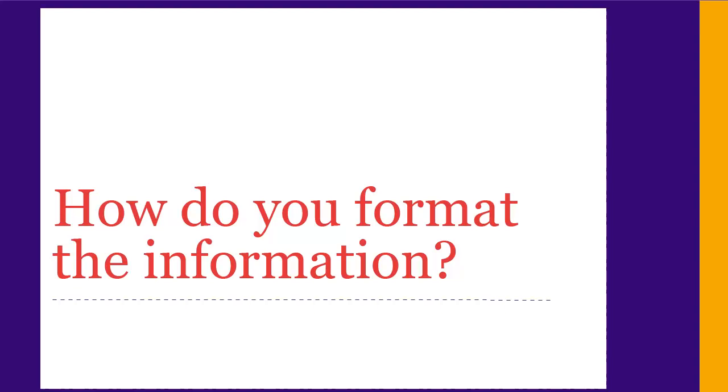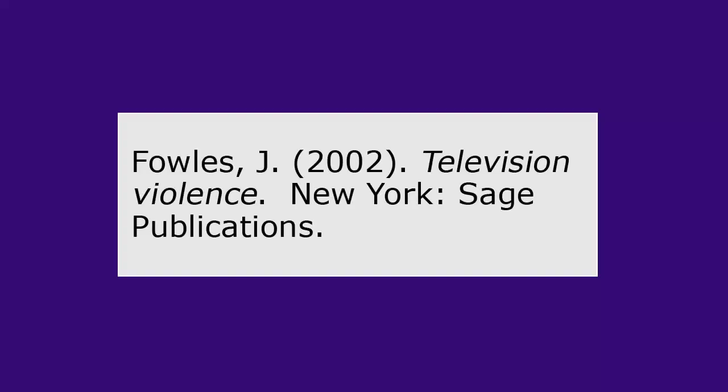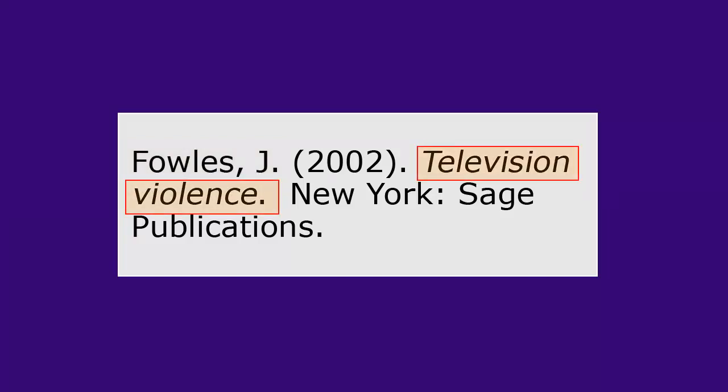Next, we'll look at how you format your citations. The way you format your citations depends on the citation style you're using. A citation style is a specific way to format all this information about each source, both for the in-text references and for the bibliography. The main advantage of citation styles is consistency — if we know the author is always first and the title is in italics, it's much easier to interpret a citation.